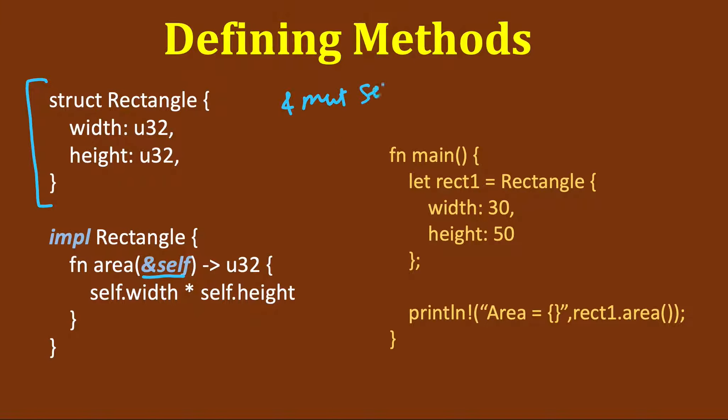You can also pass ampersand mutable self if you want to modify this rectangle, but here we are just returning the area, so we are just passing ampersand self.